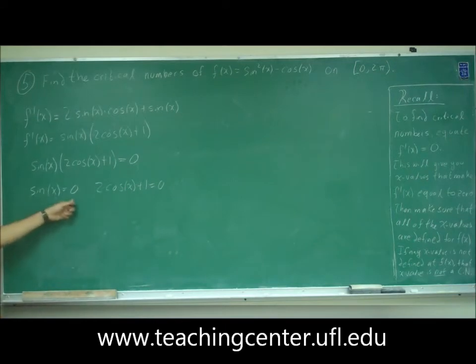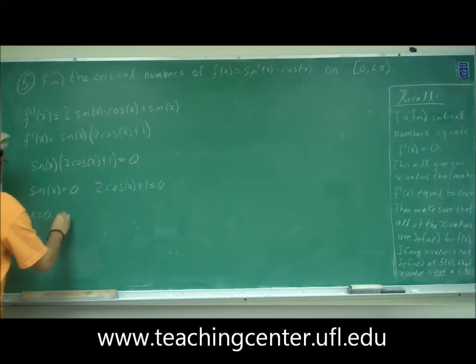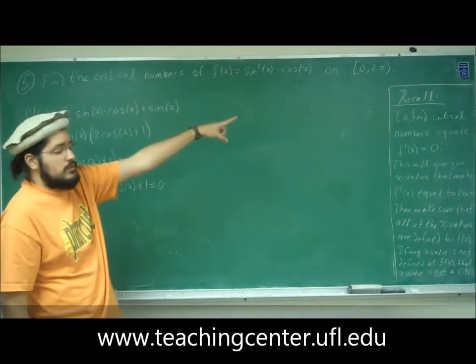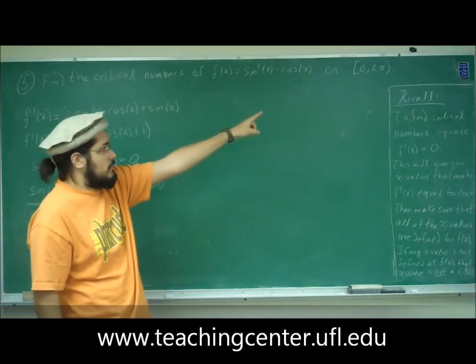Okay, when sine of x is equal to zero, that's when x is equal to zero, and when x is equal to pi. Those are the only two on that domain, from zero to two pi. We don't include two pi, because two pi is not included.